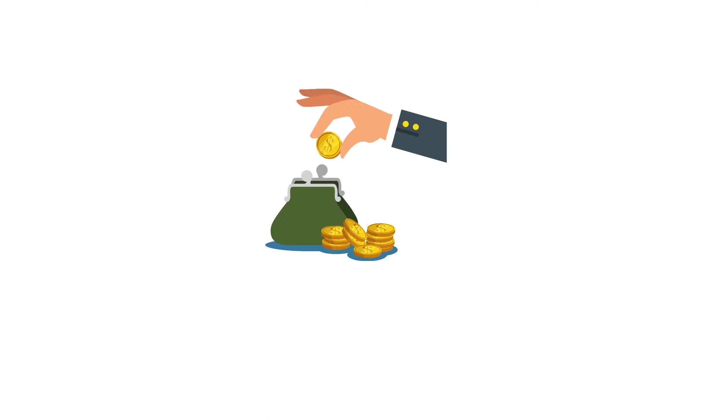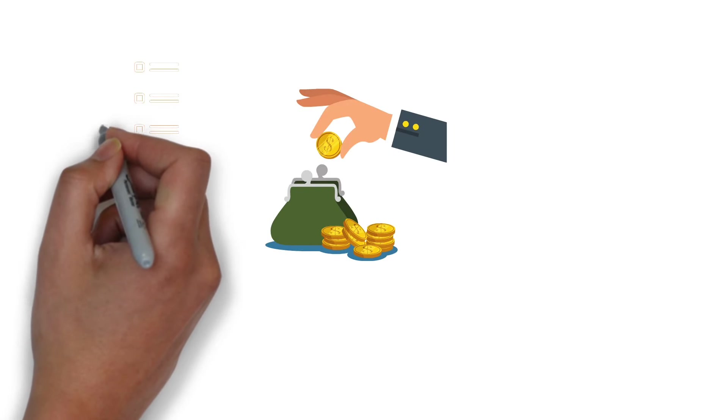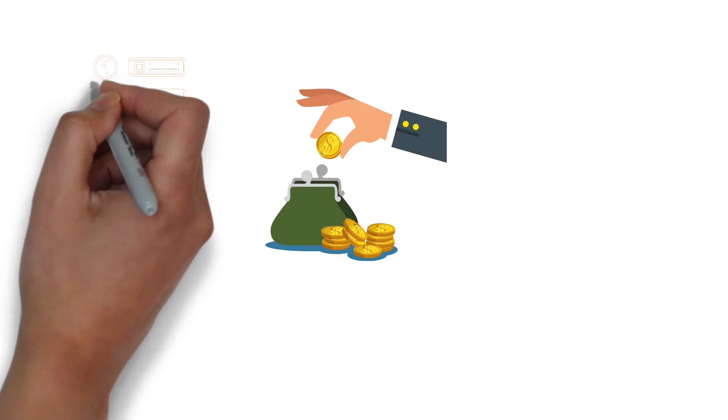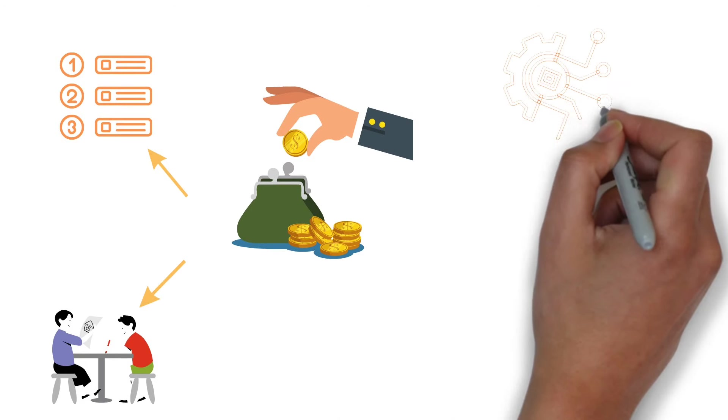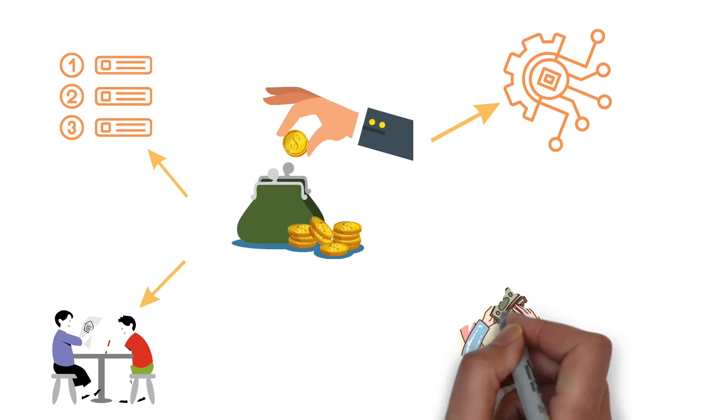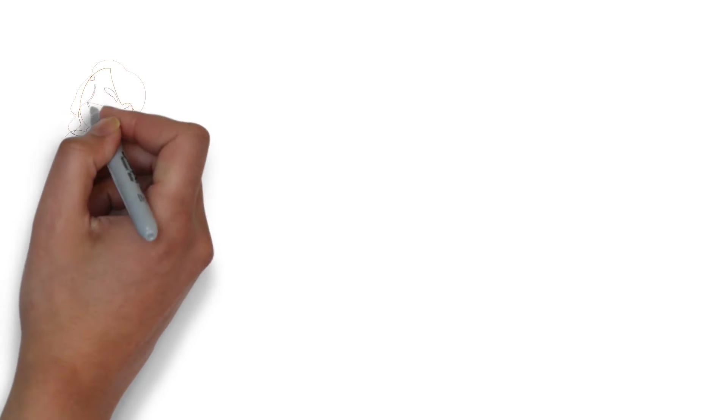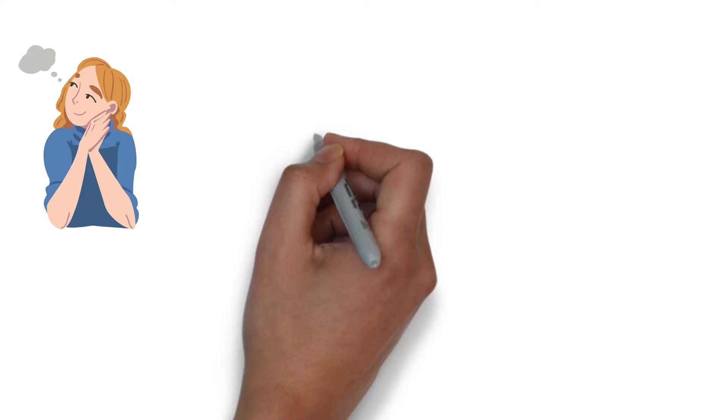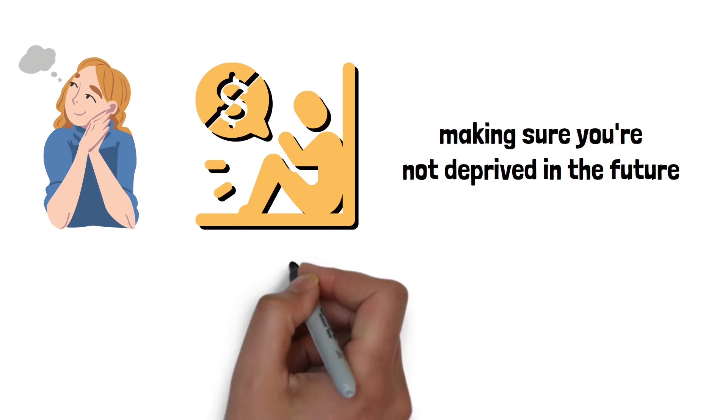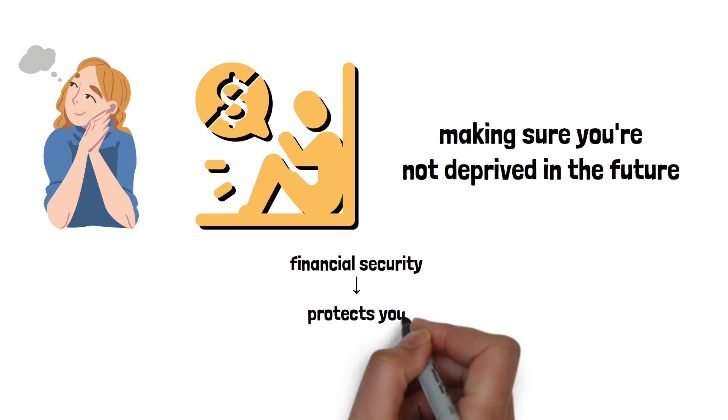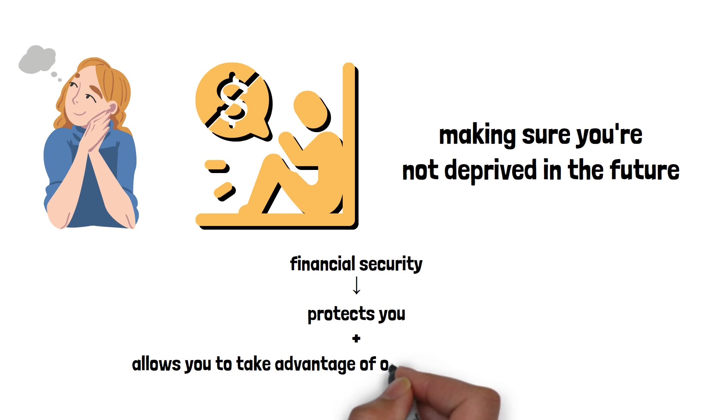The act of saving also disciplines you to control your spending. It teaches you to prioritize your financial goals and spend money on what's truly important. To save successfully, it's helpful to automate the process. Set up automatic transfers from your checking account to a savings or investment account. Remember, saving isn't about depriving yourself. By consistently setting money aside, you're creating a pad of financial security that not only protects you but also allows you to take advantage of opportunities to grow your wealth over the long term.